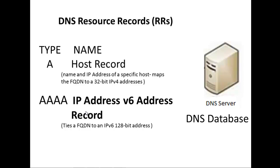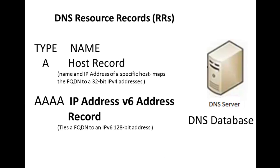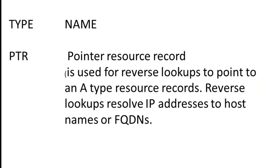Users can manually add these records to zones if they have machines that have static or manually assigned addresses. Before we look at how we would add a host record using the DNS console, let us talk about another type of record — the PTR record, standing for pointer resource record. This type of record is usually used for reverse lookups, and reverse lookups resolve IP addresses to host names or fully qualified domain names.